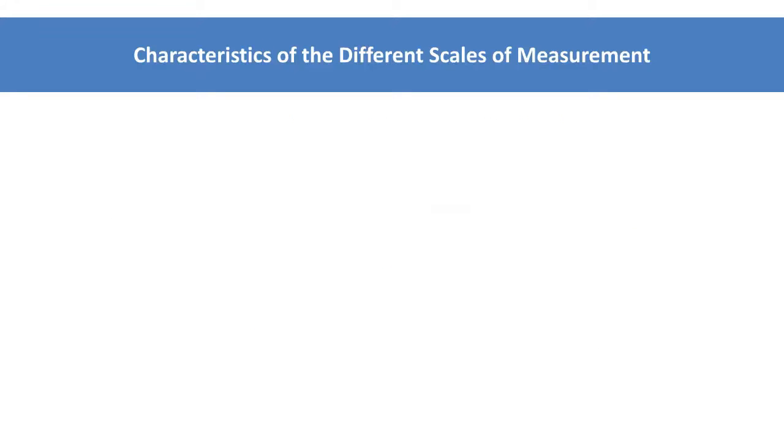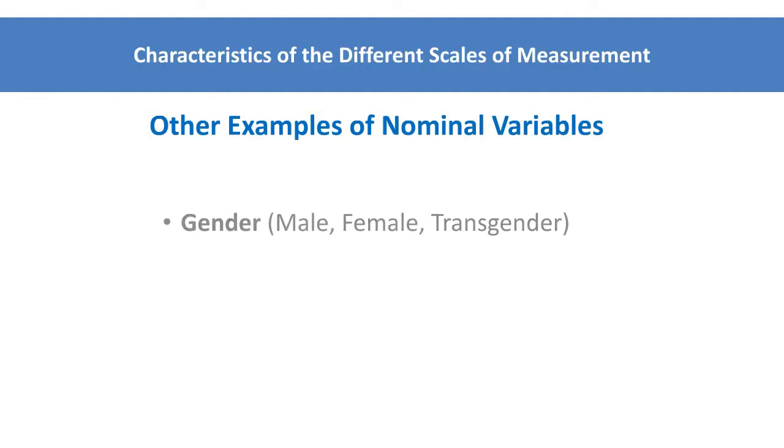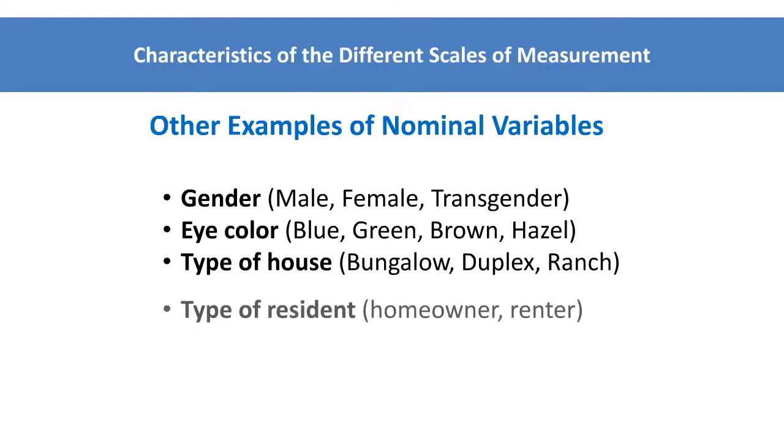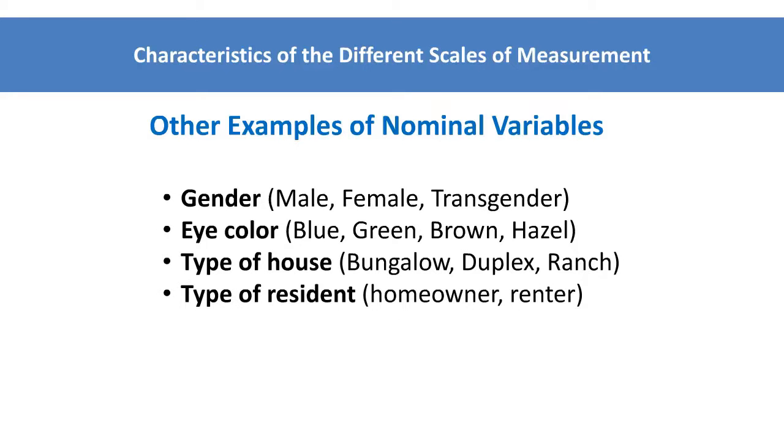Some other examples of nominal variables include gender, eye color, type of house, and type of resident. The categories for each of these nominal variables reflect qualitative differences.